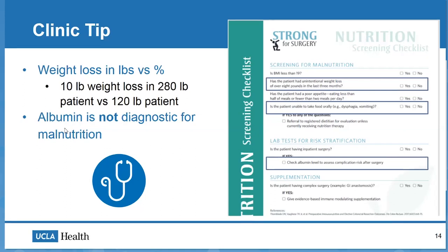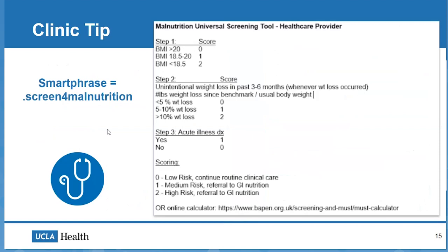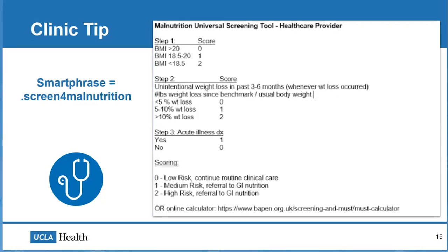When looking at nutrition screening tools, we rely on validated tools to triage people into intervention. At the Robert G. Kardashian clinic we use the Malnutrition Universal Screening Tool — the MUST tool — which assesses BMI, percent weight loss, and acute disease effect score. You simply add up the scores or use the online calculator. Any value above zero triggers a referral to nutrition. Ideally, this should be performed on initial assessment and repeated regularly. All staff — RNs to physicians — are able to use this tool. You can use the dot screen for malnutrition smart phrase to pull up this table into your chart.